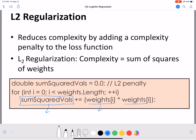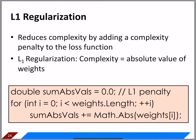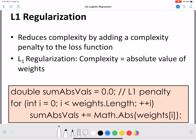For L1, the absolute value of each weight is added to the loss function. This simple procedure computes it — sum_abs_weights is the L1 penalty after the for loop ends. You use the absolute value of each weight, where weights is the entire weight vector and weights[i] is the i-th weight corresponding to the i-th feature.